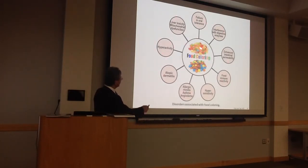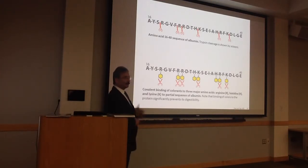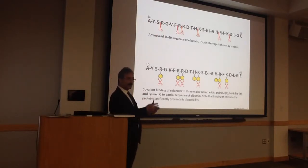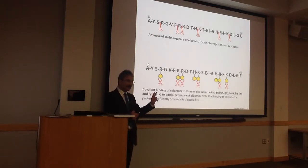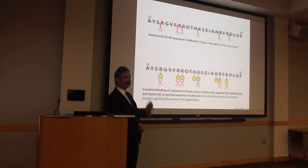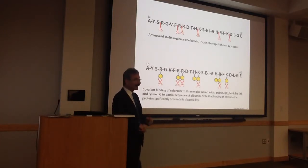These are disorders associated with food coloring. From a mechanism standpoint: food coloring binds to food proteins, and then the enzyme — the scissors — becomes dysfunctional. There are many experiments in scientific journals. If you take a protein without food coloring and add enzyme, it is digested in two hours. If you add food coloring to that protein and then add digestive enzymes, it takes eight hours to digest. So if you eat something and have bloating and symptoms, pay attention to food coloring.